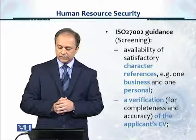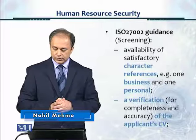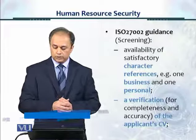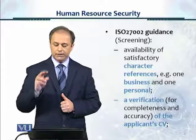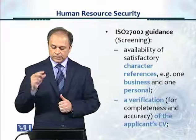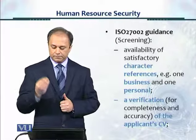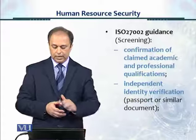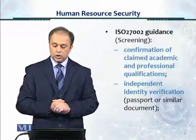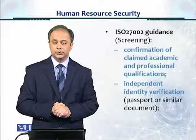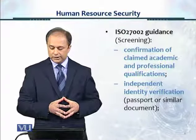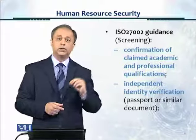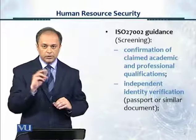For screening, 27002 guides us regarding availability of satisfactory character references — for example, one business and one personal. These are guidelines from 27002 on this screen that you can see. It also covers verification of the completeness and accuracy of the applicant's CV or curriculum vitae, confirmation of claimed academic and professional qualifications, and independent identity verification through passport or other ID. This is all guidance which 27002 provides that 27001 did not tell us — 27001 just gave us a very brief statement regarding screening.